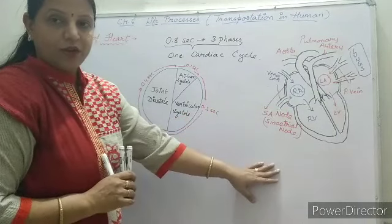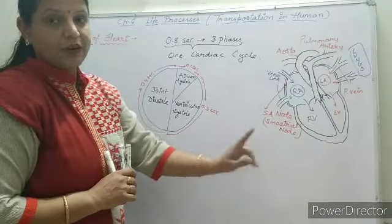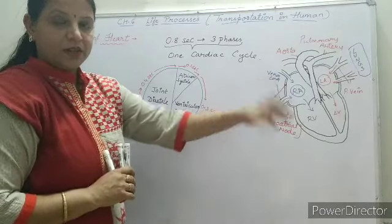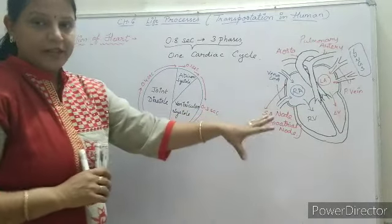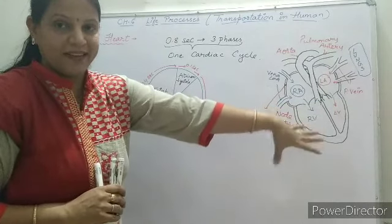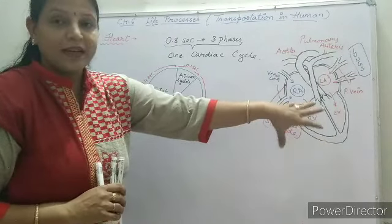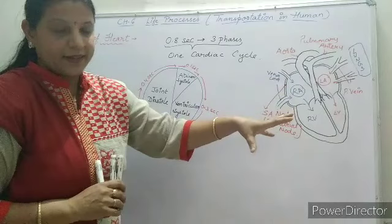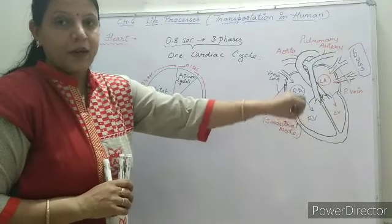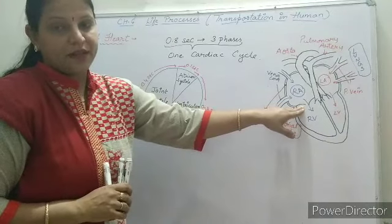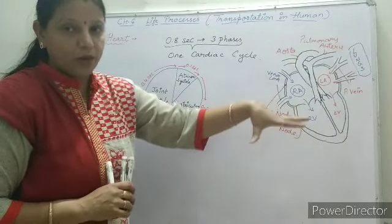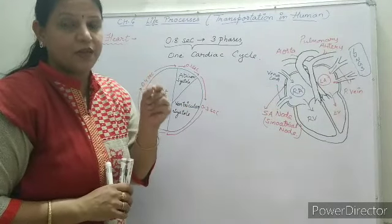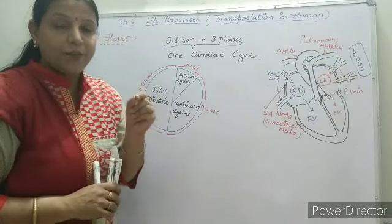This second phase lasts for only 0.1 second — it is the shortest phase of blood transfer in the heart. Next, when blood enters into the ventricles, both ventricles begin contracting due to increased pressure inside. When the ventricles start contracting, the pressure increases and due to increased pressure inside the ventricle, the tricuspid and mitral (bicuspid) valves get closed. Due to this closing of valves, a sound is produced — this sound is known as S1 sound or lub sound.